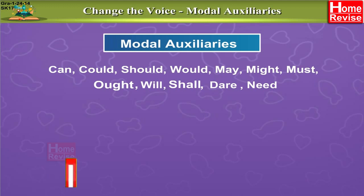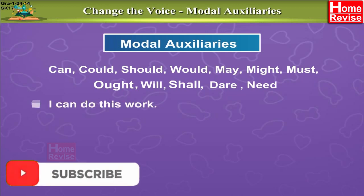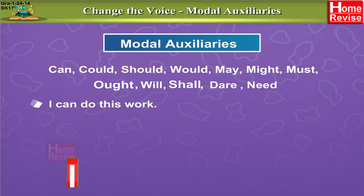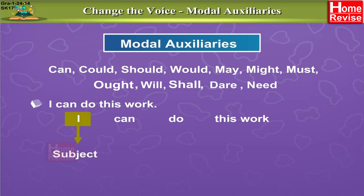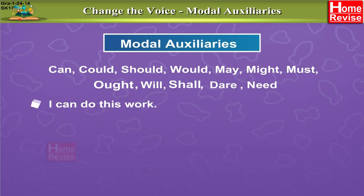Now let's understand the usage of modal auxiliaries. Take the sentence: 'I can do this work.' In this sentence, 'I' is the subject, 'can' is the modal auxiliary, and 'do' is the main verb. Now we are going to change such sentences into passive voice.